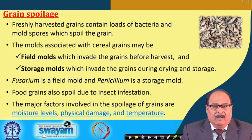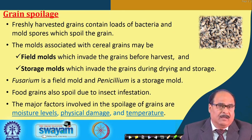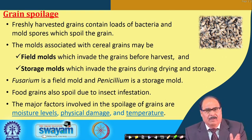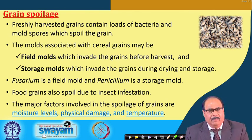The molds associated with cereal grain spoilage — the major causative agents — may be field molds or storage molds. Field molds are those which invade the grain before harvest; they attack the grain in the field. Storage molds generally invade the grain during post-harvest operations like drying, handling, and storage, if they find conditions in the grain favorable for their growth. Fusarium is a field mold and penicillium is a storage mold.